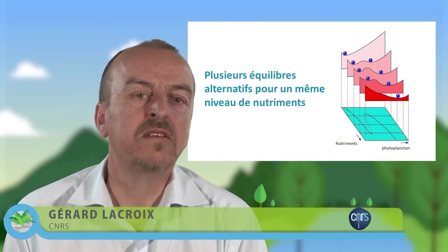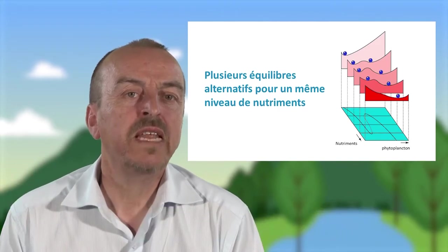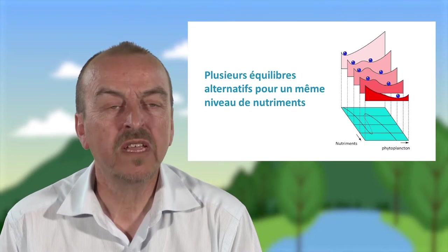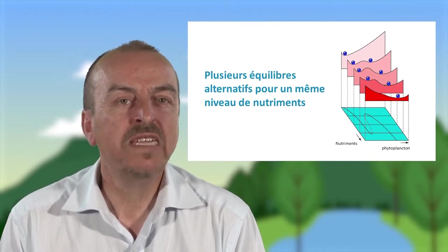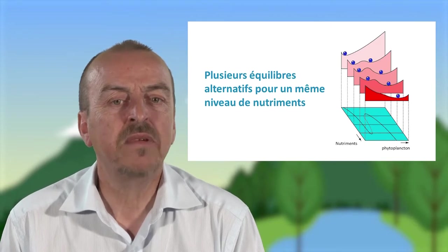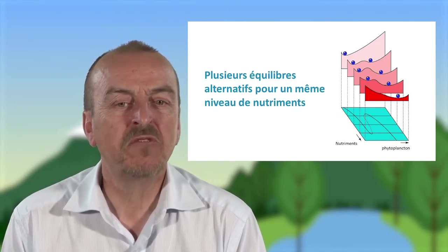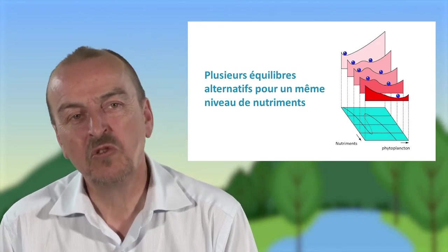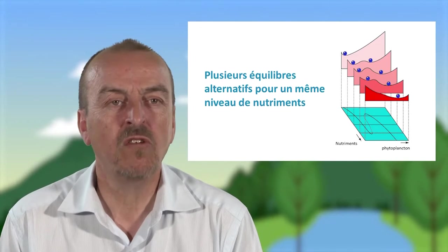Si maintenant on repasse avec l'interaction entre ces cascades trophiques et les nutriments, on peut faire les prédictions suivantes. Dans un système avec très peu d'apport en nutriments, on n'aura qu'un seul état d'équilibre possible : il y a peu de ressources, donc il y a peu d'algues. Si maintenant on augmente les apports en nutriments, par exemple en phosphore, on va pouvoir avoir deux états d'équilibre alternatifs : des systèmes avec des eaux claires et des systèmes avec des eaux plus turbides. Ces deux états d'équilibre sont associés à la structure des chaînes alimentaires — des poissons planctivores ou des poissons piscivores en sommet de chaîne.